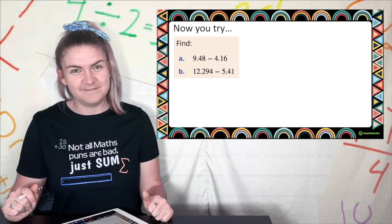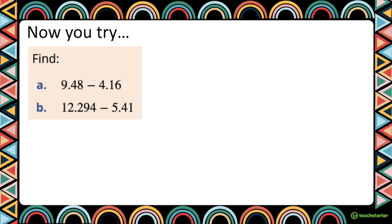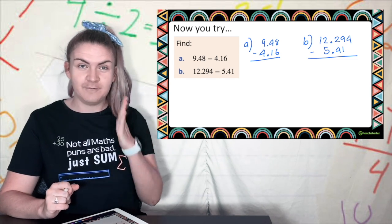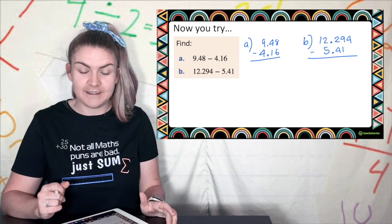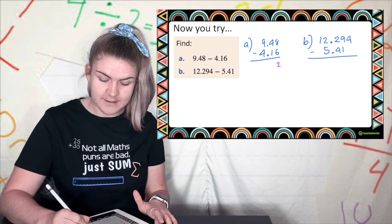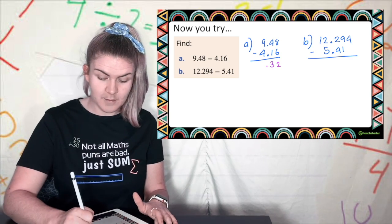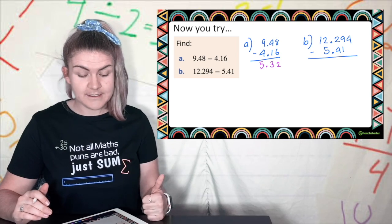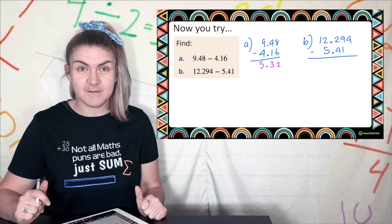You try subtract some decimals. Let's quickly check our answers. So a I've written it out and I put them in line so now I can subtract like normal. 8 take away 6 is 2. 4 take away 1 is 3. There's the decimal point so I put it in. 9 take away 4 is 5. Check the reasonableness. 9 take 4 is 5. That seems great.